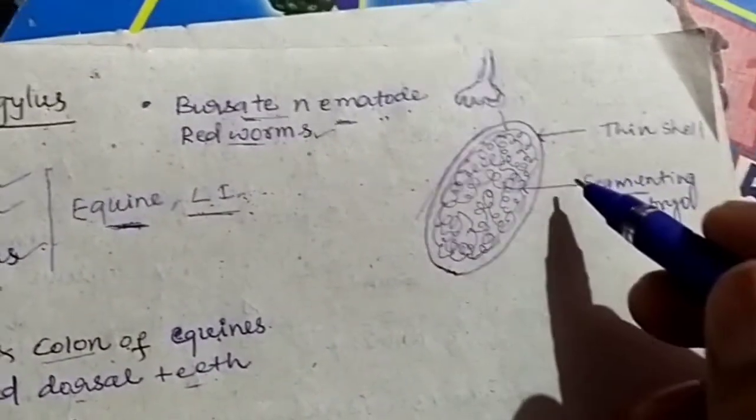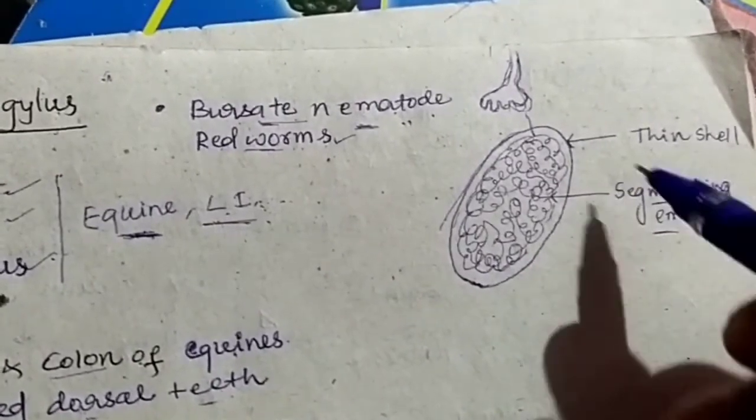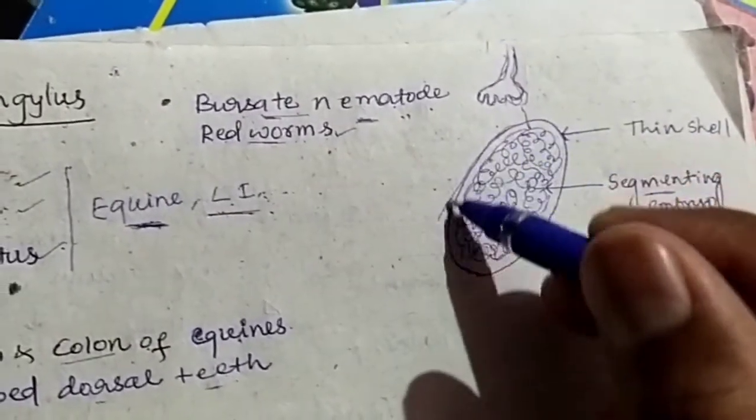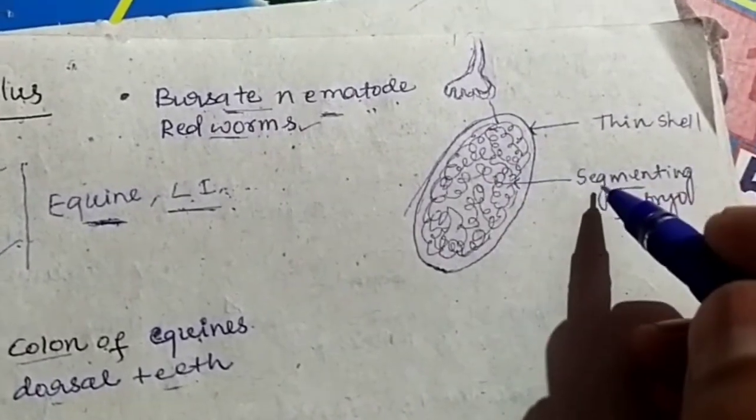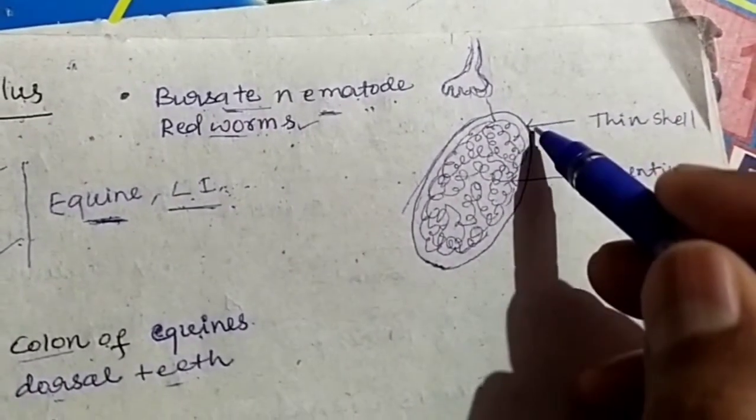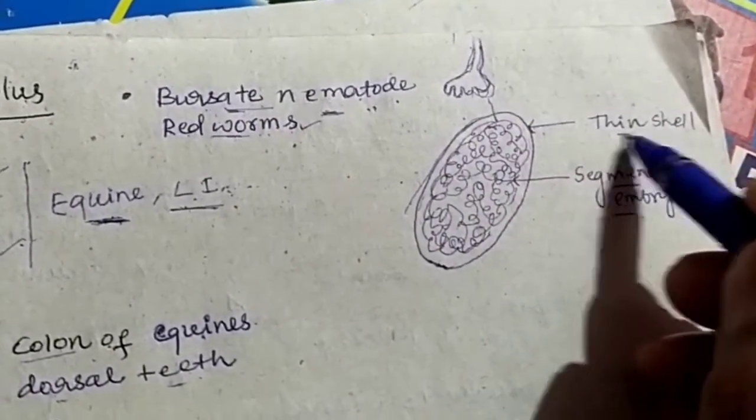Let us come to the egg of the Strongylus species. The egg is oval in shape, contains segmented embryo, and is covered by a thin shell membrane.